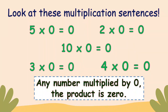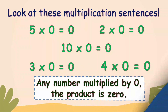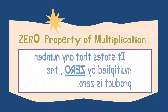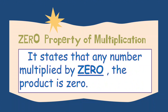Any number multiplied by zero, the product is zero. That is what we call the zero property of multiplication. It states that any number multiplied by zero, the product is zero — for example, one hundred times zero equals zero, and one million times zero equals zero.